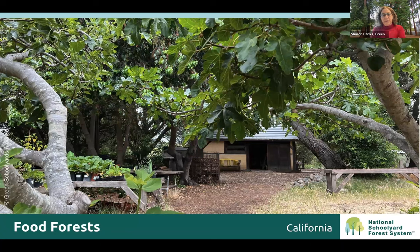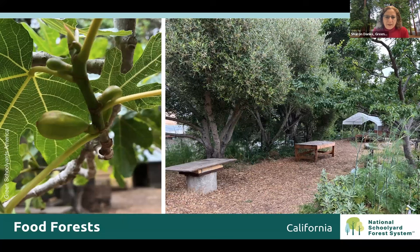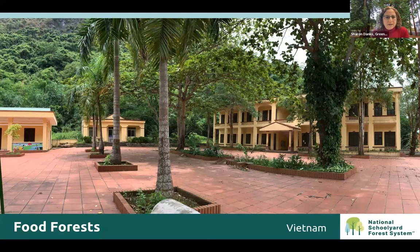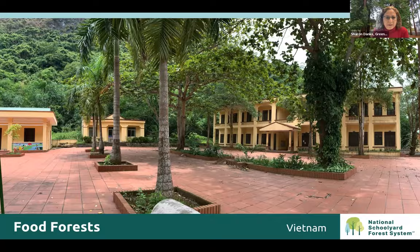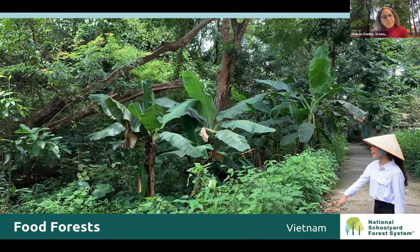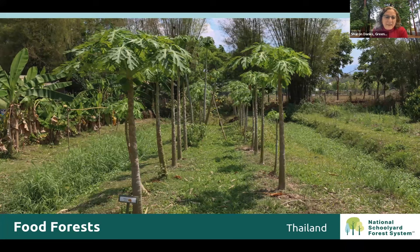We have forest designed to be food forests — producing food. This is at the Edible Schoolyard in Berkeley, where fig trees and other fruit trees not only provide shade but also provide a lot of food. There are also shots of figs and olives there. Another food forest in Vietnam has tropical trees including papaya, durian, and bananas. And one in Thailand — those look like papayas growing in a little grove; they're fairly young trees.